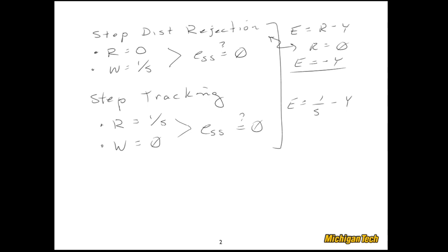We're going to take another look at that block diagram and write out an expression for Y in terms of the two inputs R and W. Once we have that, we'll do an example where we plug in some values for D, G, and L and go through the analysis. Then we'll whip up a quick Simulink simulation and confirm the results we get by hand.